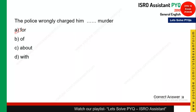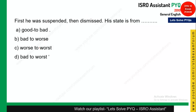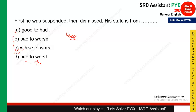The next question: 'The police wrongly charged him ___ murder.' The answer is 'for' — charged him for murder — so option A is the right answer. The following question is from superlatives: first he was suspended, then he was dismissed. His state went from bad to worse. Since being suspended is already a bad condition, and then he was dismissed, his state went from worse to worst. So option C should be the right answer.